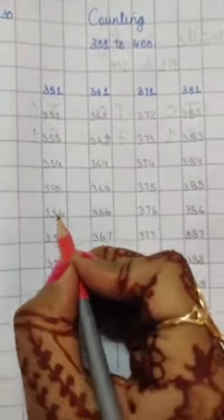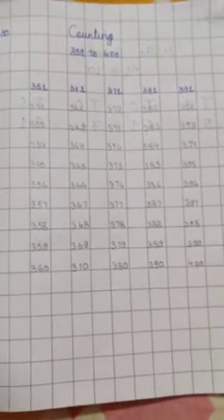So, this is your counting from 351 to 400. Write it down in your maths notebook. While writing, always touch bottom line of the box and speak it loudly and send me. Thank you.